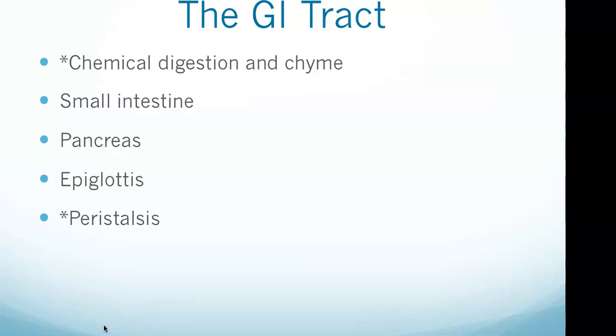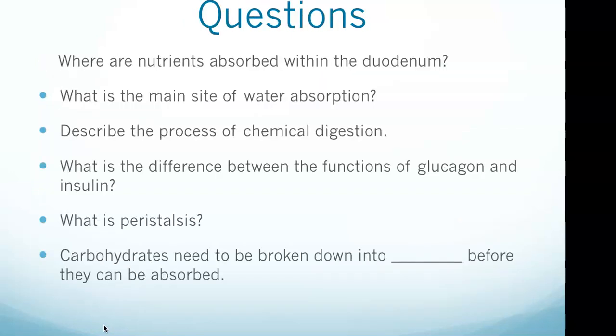Peristalsis is the wave-like smooth muscular contraction of the digestive system, beginning in the esophagus. It moves food along the digestive tract in the normal direction, which is mouth to anus. So peristalsis starts in the esophagus and moves food along the digestive tract in the normal direction.